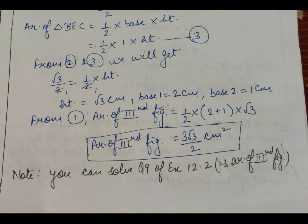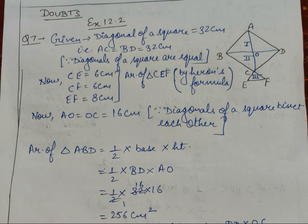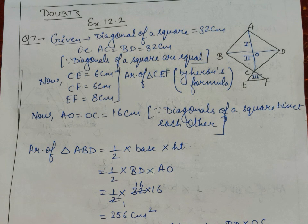Now come to the doubts section, exercise 12.2 question number 7. Given is the diagonal of a square: AC = BD = 32 centimeters, as diagonals of a square are equal. Also given: CE = 6 cm, CF = 6 cm, and EF = 8 cm. Using these three values, we can find the area of triangle CEF by Heron's formula.